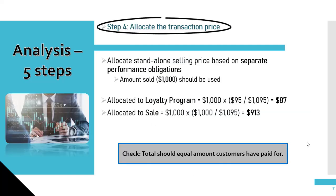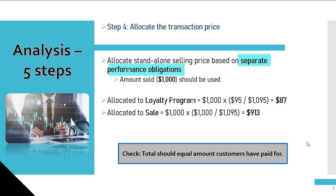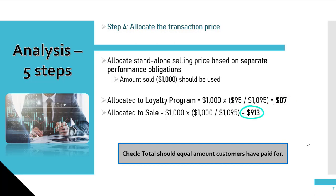Now, once you have the transaction price, we can move on to step four, which is allocation. It is necessary to estimate the standalone selling price of the option to allocate based on the separate performance obligations. In this case, we have noted that there are two. The amount sold, which is $1,000, should then be proportionately allocated to the loyalty program and to the revenue upon the initial sale of shoes. As you can see here, the amount allocated to the loyalty program is $87, while the amount allocated to the sale of the shoes will be $913.